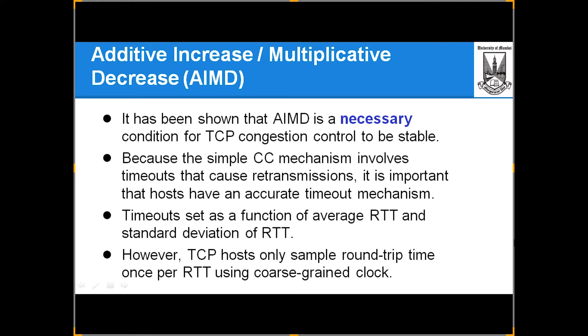Additive increase and multiplicative decrease is a necessary condition for TCP congestion control to be stable. Because the simple congestion control mechanism involves timeouts that cause retransmission, it is important that hosts have an accurate timeout mechanism. Without a timeout mechanism, you will not know when to retransmit data. The controlling steps are the congestion window and the timeout factor.